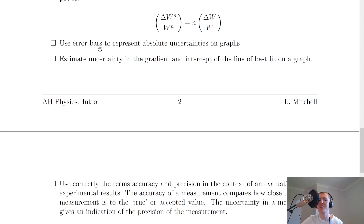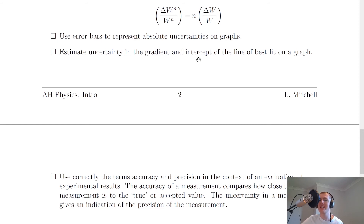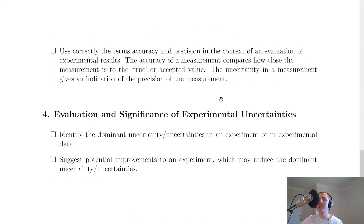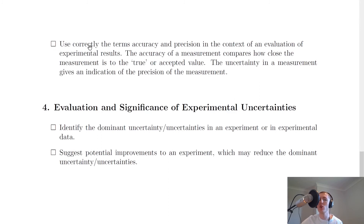For data analysis, you need to be able to use error bars to represent absolute uncertainties on graphs, and to estimate the uncertainty in the gradient and intercept of the line of best fit on a graph. It's worth noting the Linest feature in Microsoft Excel, which can do a lot of this hard work for you — keep that in mind when doing your project for Advanced Higher. Lastly for data analysis, you need to use correctly the terms accuracy and precision in the context of evaluating experimental results. The accuracy of a measurement compares how close the measurement is to the true or accepted value, whereas the uncertainty gives an indication of the precision.